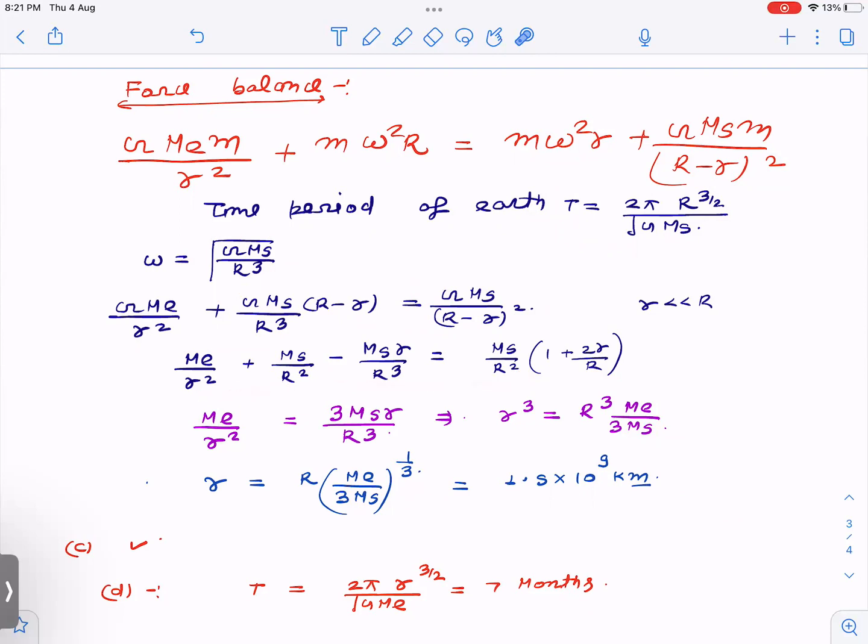If you solve this step, it's very easy after taking approximation. You will get the Hill sphere radius as small r = R ∛(Me / 3Ms), where Ms is the mass of the sun. If you substitute the values given in the question, we get 1.5 × 10⁹ kilometers. So option A is correct.